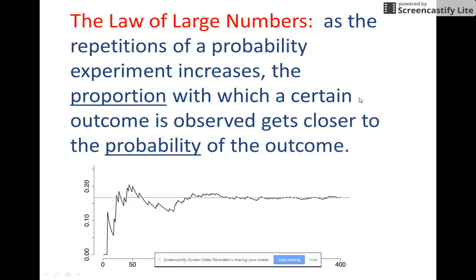Now, the law of large numbers says as the repetitions of a probability experiment, and that's what flipping the coin means is a probability experiment. So the more times you flip the coin, the proportion with which a certain outcome is observed gets closer to the actual probability of the outcome. And so this would be a graph of flipping the coin many, many, many times. And once you get up here to 300 or 400 times, it averages pretty close to 50%.